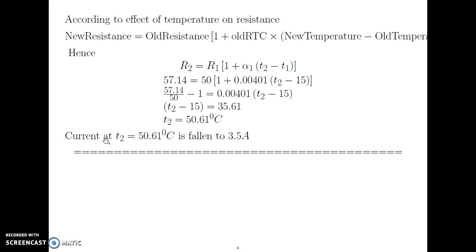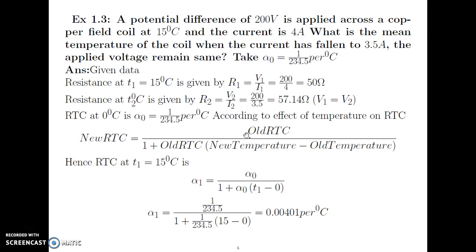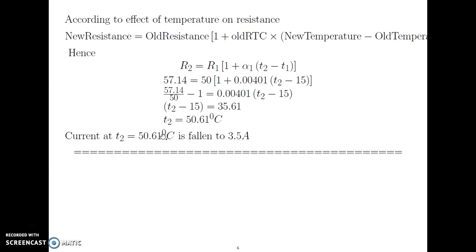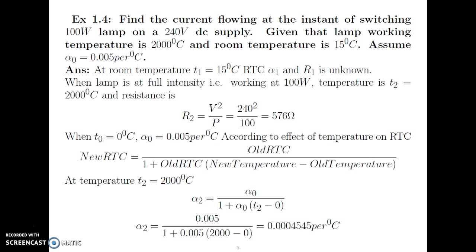We found that at 50.61 degree Celsius, the current falls to 3.5 ampere. Keep in mind this is a copper coil. For copper, as temperature increases, resistance increases, and increased resistance means reduced current. So at 15 degree Celsius the resistance was 50 Ohm with 4 ampere current, and at T2 equal to 50.61 degree Celsius the current has fallen to 3.5 ampere.